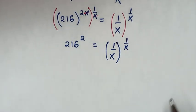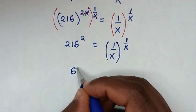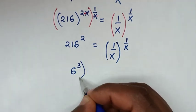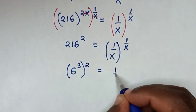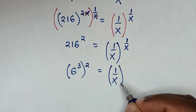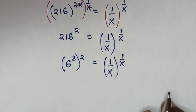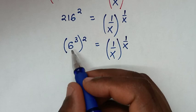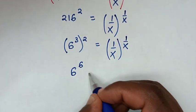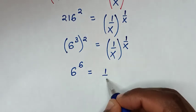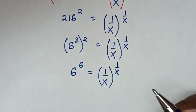In the next step, 216 is the same as 6^3, so 6^3 raised to the power of 2 gives us 6^6, and this is equal to (1/x)^(1/x).